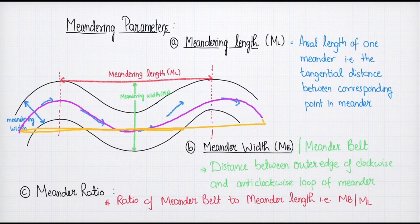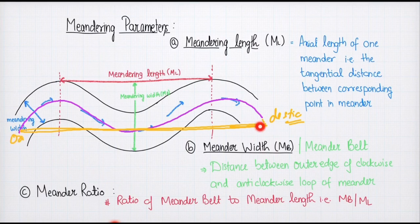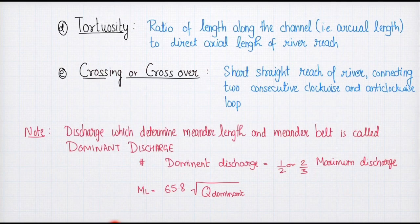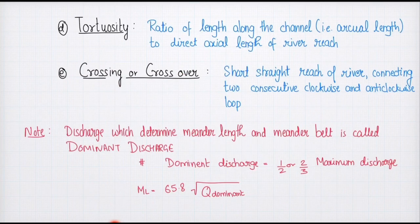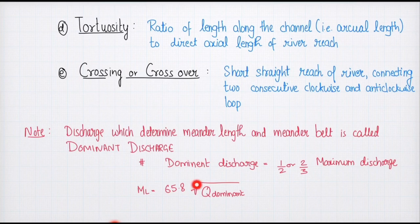If this is the origin and this is the final point of the river, then the arc length along the river and the straight axial distance define tortuosity. Then we have crossing or crossover, which is the short straight reach of the river connecting two consecutive clockwise and anti-clockwise loops — that is, the distance between two consecutive same-type loops. To calculate meander length and meander belt, we use dominant discharge, which is 1/2 to 2/3 of the maximum discharge. Given the dominant discharge Q, the meander length equals 65.8 times the square root of Q.